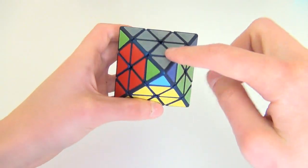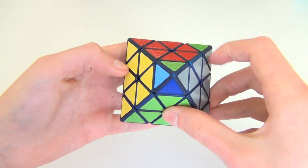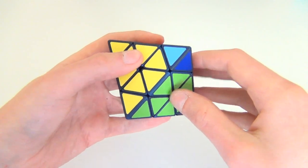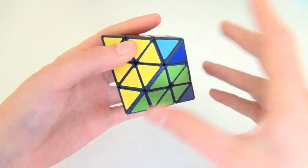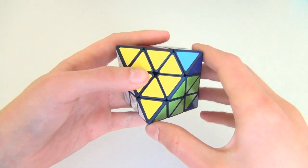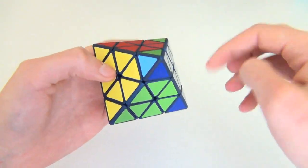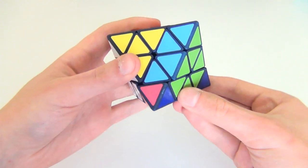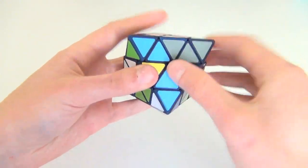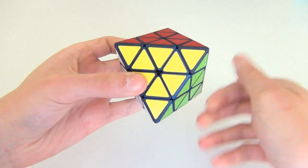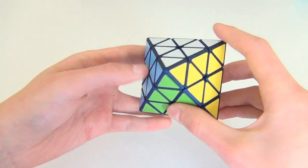So hold the puzzle like this now. This is pretty much the best way to hold it to do this, to execute this algorithm, this finger trick. And then of course, it's just the counterclockwise CP. So that's F D' F U F' D F U' F. And the puzzle is now solved.